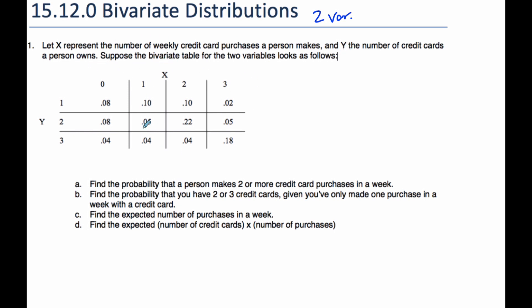Suppose this is what the table looks like. There are lots of different combinations. I could make two purchases a week and have two credit cards, and that probability would be 0.22. If I sum up these totals and add them up, the probability of having one credit card is 0.3 when I add 0.08, 0.10, 0.10 and 0.02.